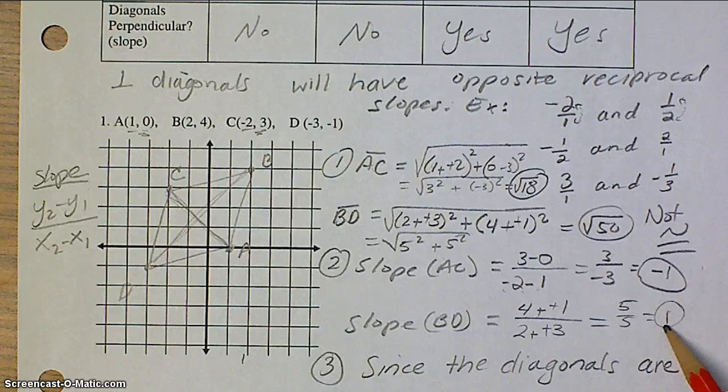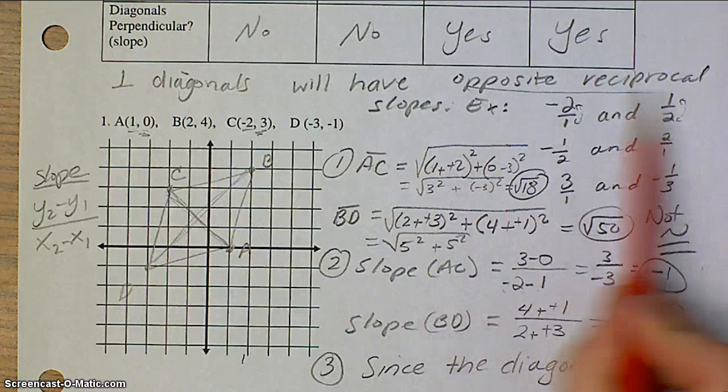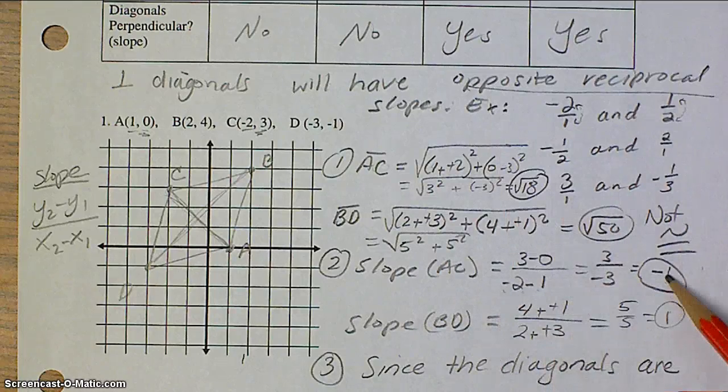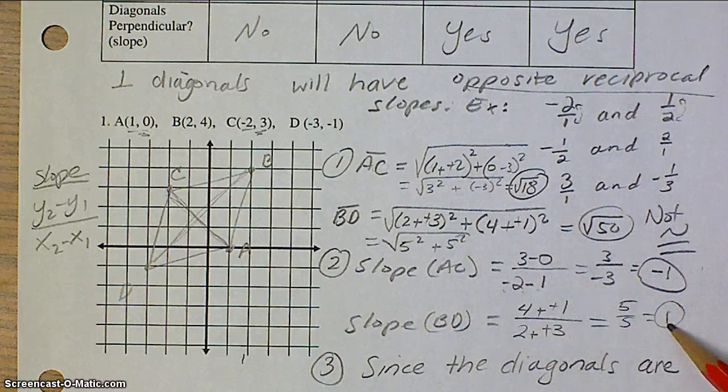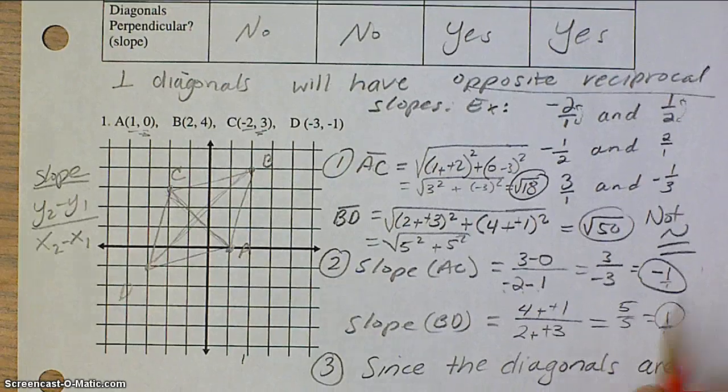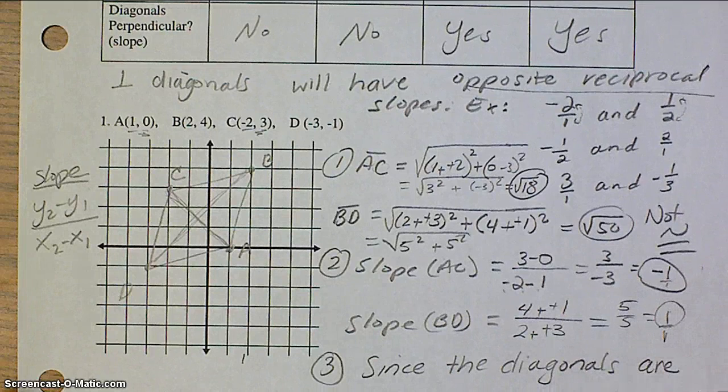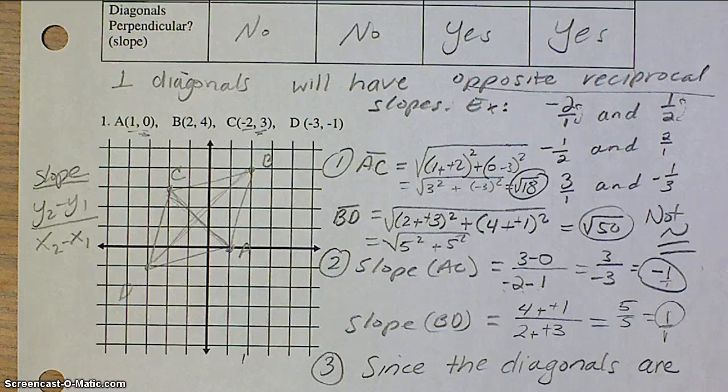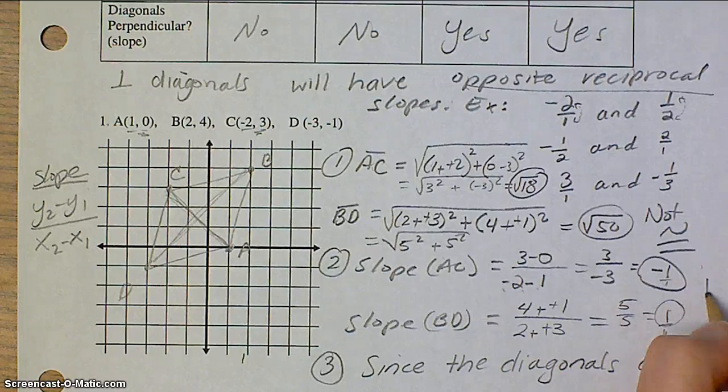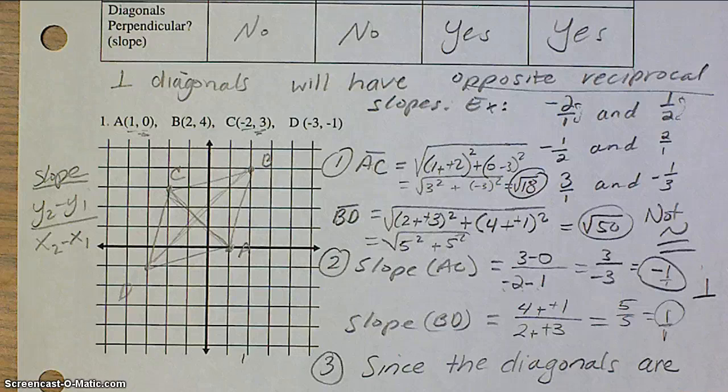Negative 1 and positive 1, are those opposite reciprocals? This one's negative, this one's positive. Yep. And, if you want to write them as fractions over 1, they are, in fact, reciprocals as well. So, this means that we do have perpendicular diagonals.